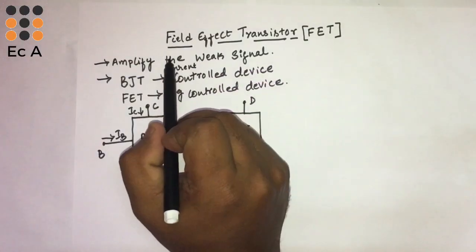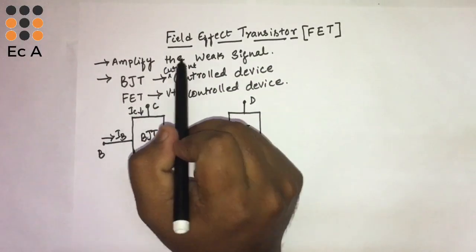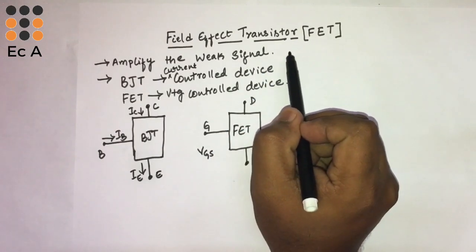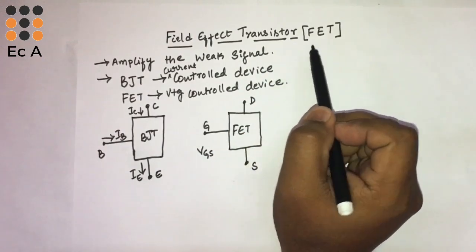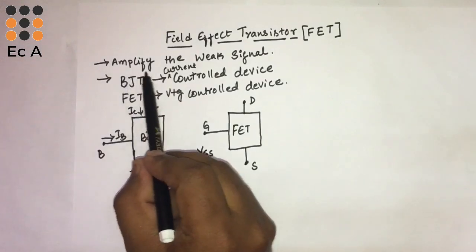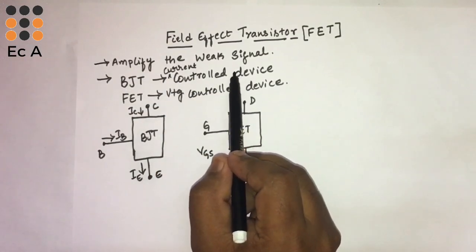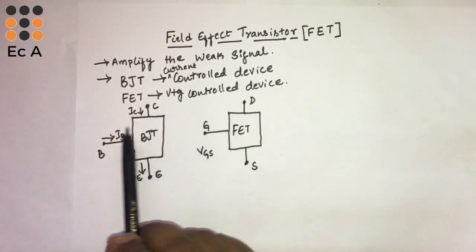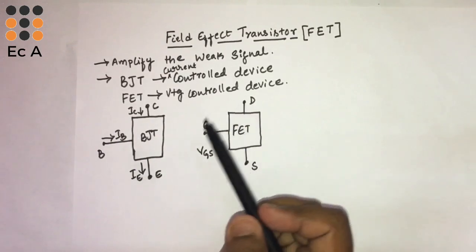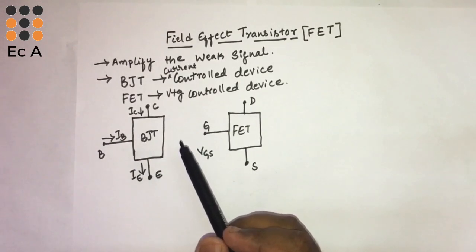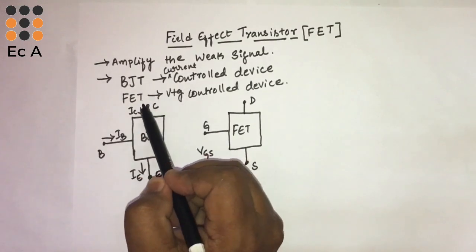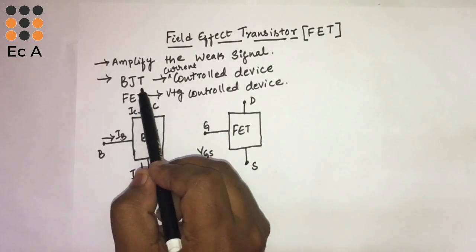Hello friends, welcome to Easy Academy. In this lecture we will discuss about field effect transistor, which is commonly known as FET. FET is used to amplify the weak signal, which means the application of field effect transistor is similar to the application of bipolar junction transistor, but there are few differences between BJT and FET.